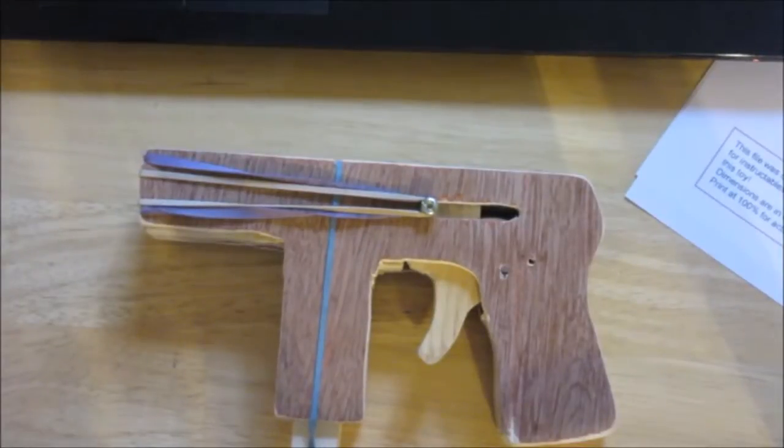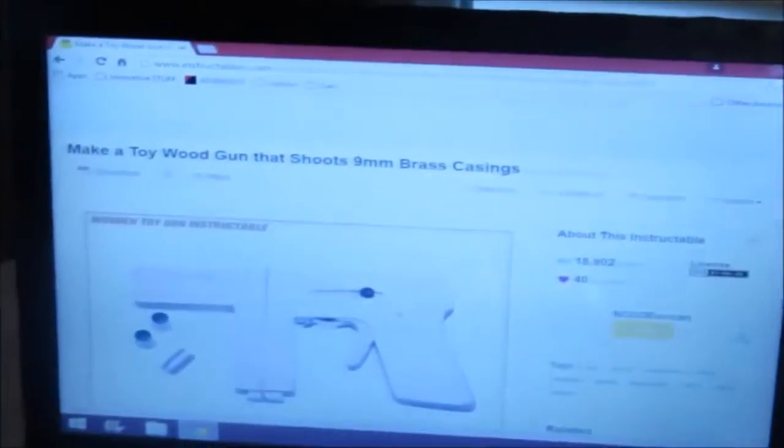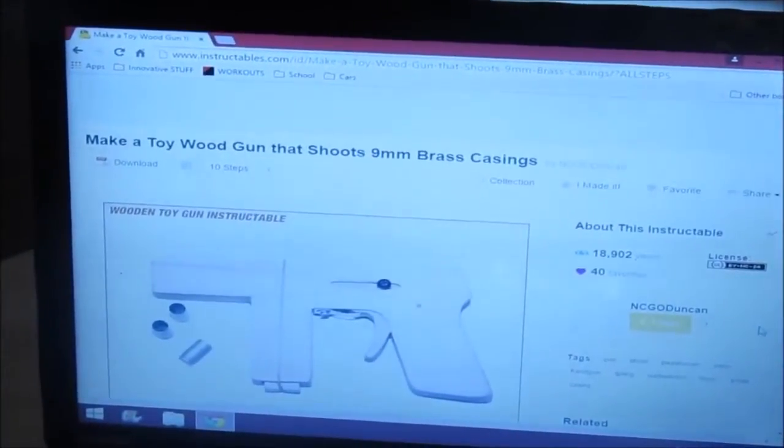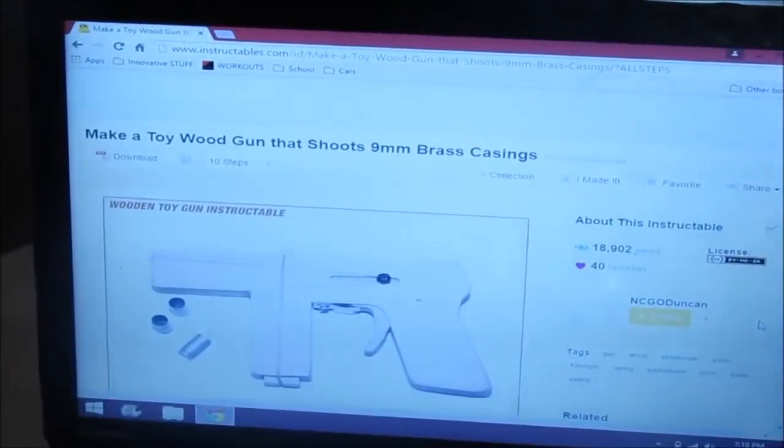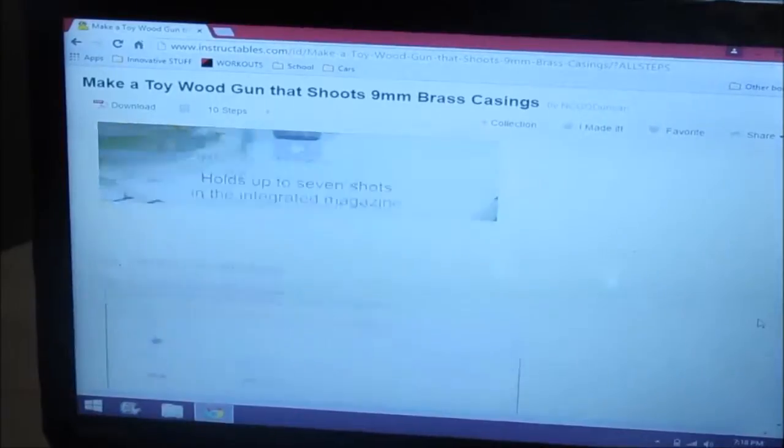So where I found the project plans for this gun is actually on Instructables.com. I'll put the link in the description, but it's actually called Make a Toy Wooden Gun that Shoots 9mm Brass Casings, and on the website here it has the full detailed how-to.